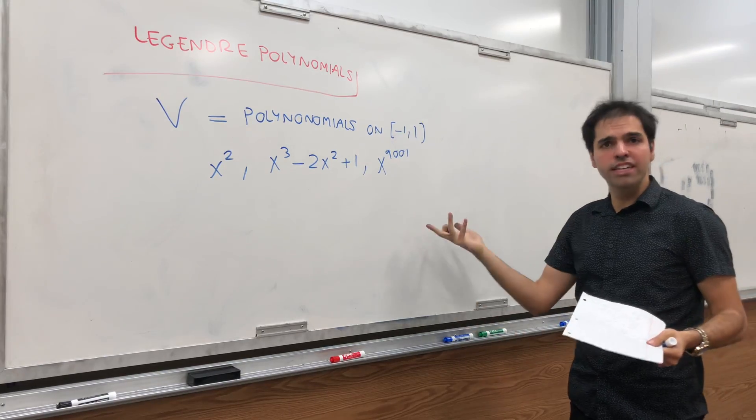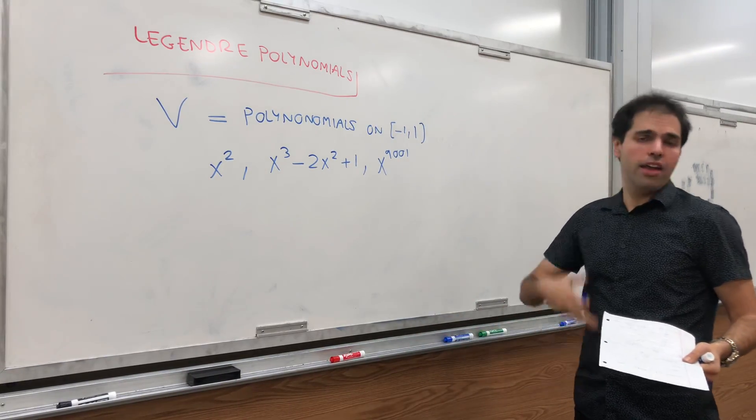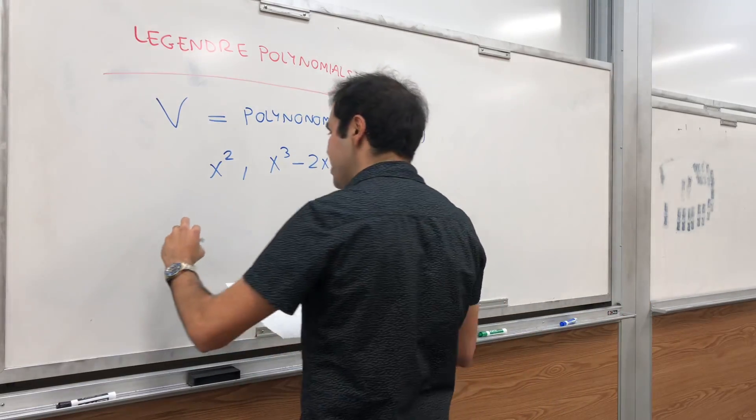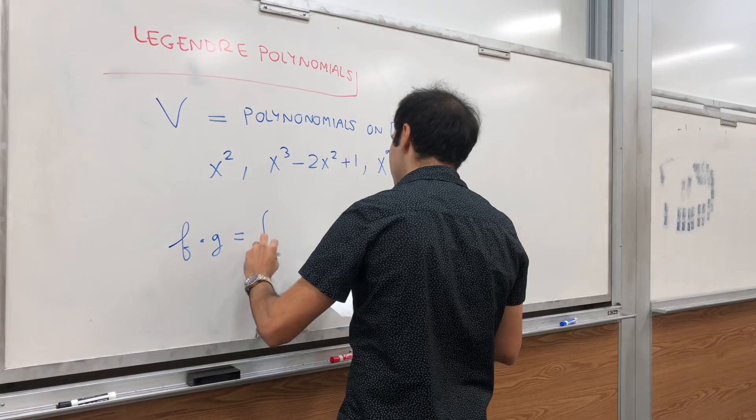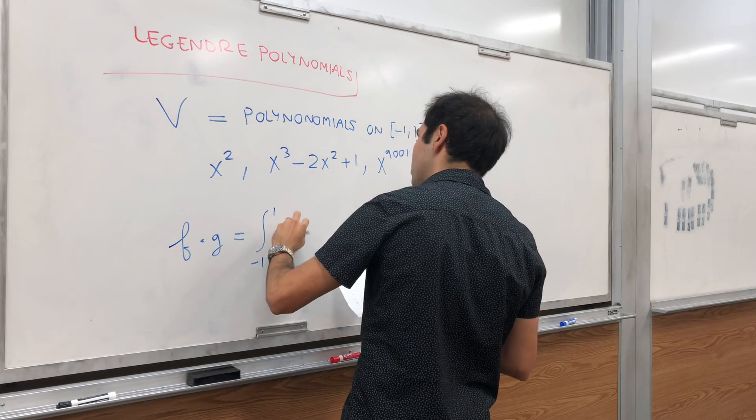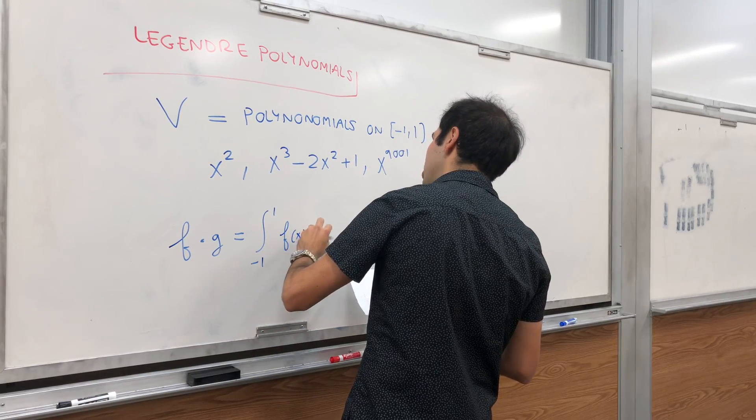In particular, let's turn it into an inner product space by introducing a dot product. Here, let f dot g just be the integral from minus 1 to 1 of f of x, g of x dx.